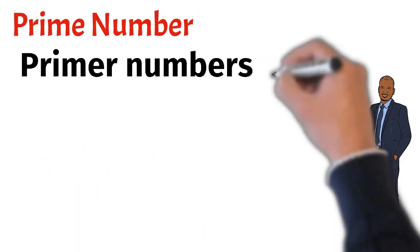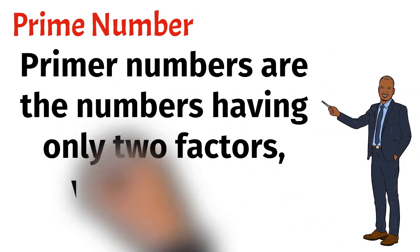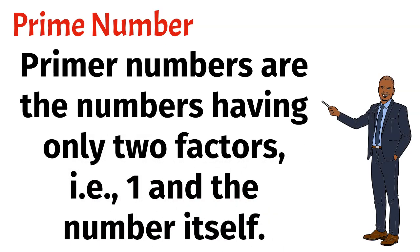What are prime numbers? Prime numbers are the numbers having only two factors, that is one and the number itself.